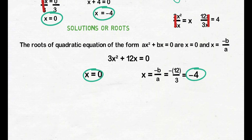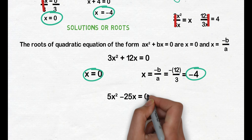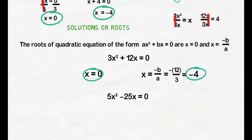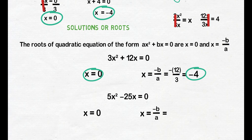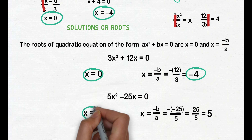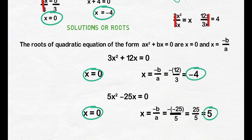Try naman natin kunin ang mga roots ng 5x squared minus 25x equals 0. Ang equation ay nasa form na ax squared plus bx equals 0, so ang isang root natin ay laging equal sa 0. Isubstitute naman natin ang mga values ng a at b sa formula na negative b over a: b is negative 25 and a is 5. Huwag kalimutan ilagay ang parenthesis sa b. Simplify: negative times negative 25 is positive 25, divide by 5, the answer is 5. So, ang mga solutions natin ay 0 at 5.